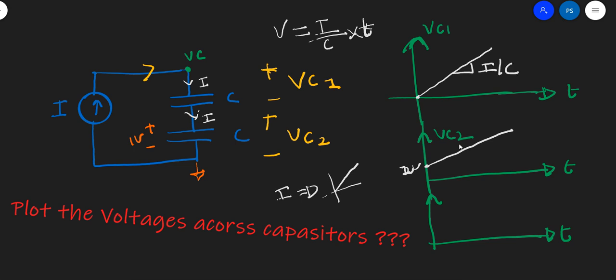Similarly, for this capacitor the slope is the same. They have the same slope: the slope is I by C.